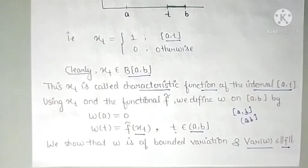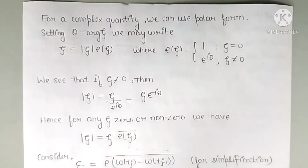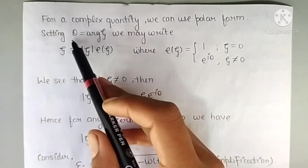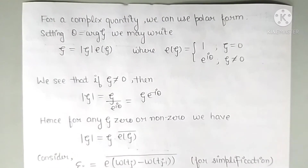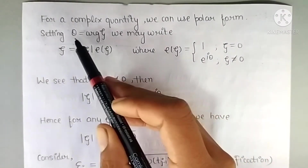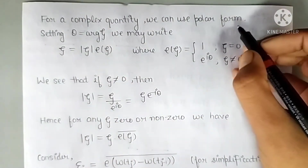Now we show that this w is of bounded variation and that V(w) ≤ |F|. To do this, we consider the polar form of any complex quantity. Let θ = arg(ζ) for any complex number ζ.